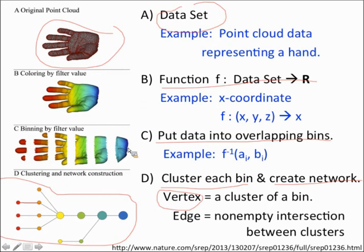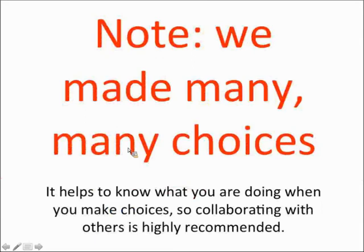Note that we made many, many choices. Frequently you have to think about how to make those choices — the better you understand the application, the better off you are. If you're a biologist with data, what you'll often do is make the choices, publish your paper, and then talk to mathematicians to see if they have better ideas. The mathematicians will frequently say you have great intuition, and sometimes they'll add ideas from mathematics or statistics. All my biology collaborators really are brilliant, and they usually have great ideas before they even invite me in.